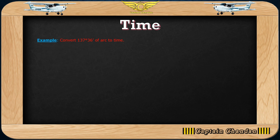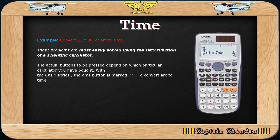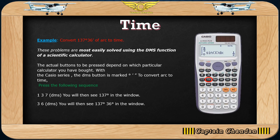The second example shows how to use a calculator to solve this kind of problem. On a scientific calculator there is a button for degrees, minutes, and seconds function. By pressing the following sequence on the scientific calculator, you can get time in the form of hours, minutes, and seconds — it is very easy to calculate.